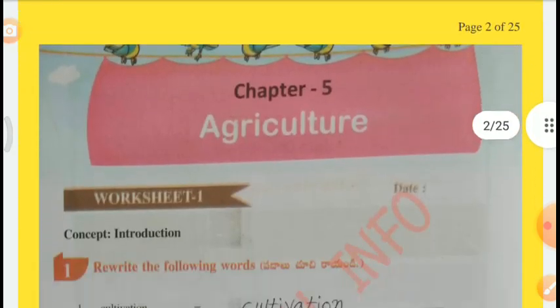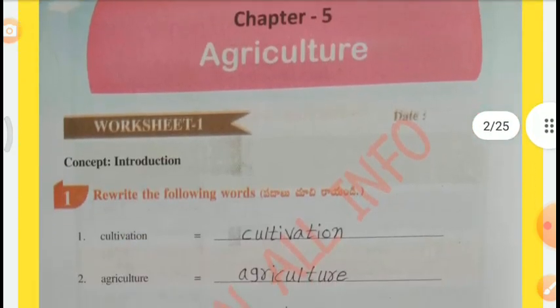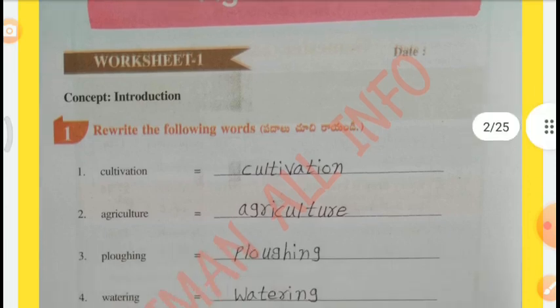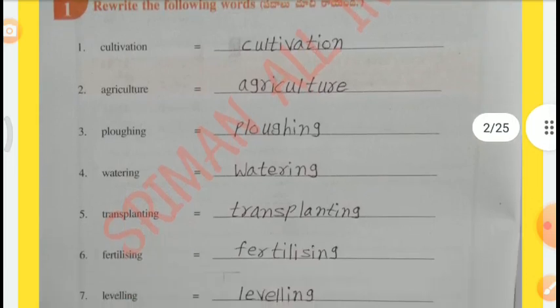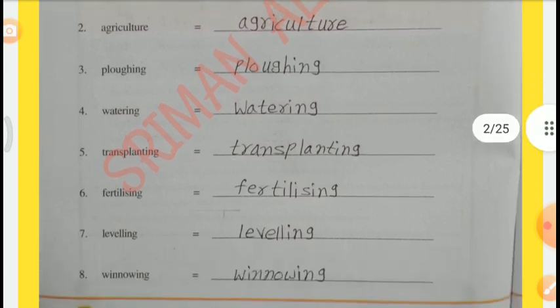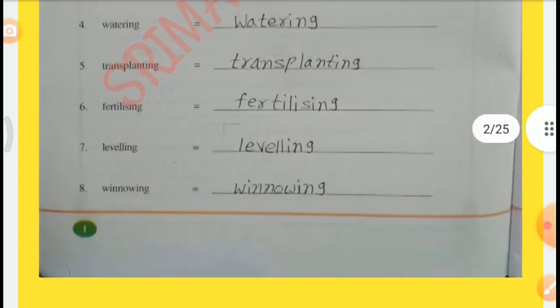Worksheet 1, Concept Introduction. Rewrite the following words: Cultivation, Agriculture, Plowing, Watering, Transplanting, Fertilizing, Leveling, Winnowing.